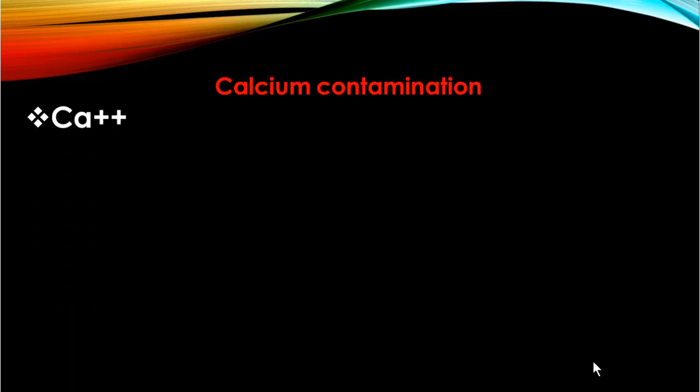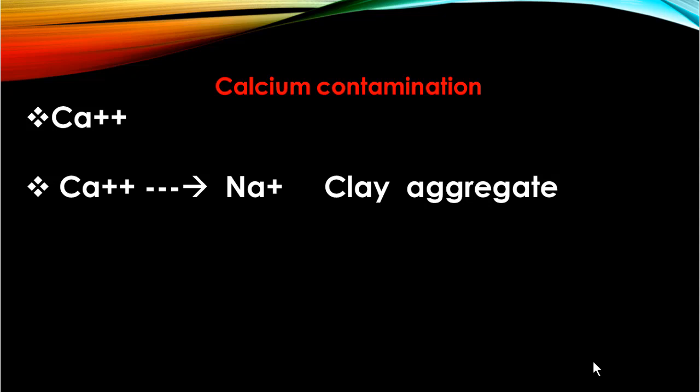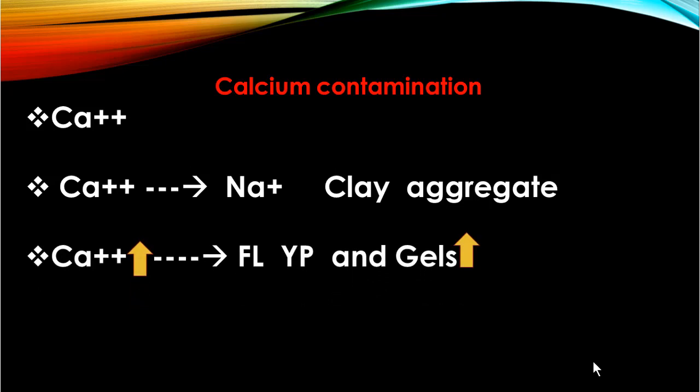For calcium contamination, calcium ions may become sufficiently concentrated to flocculate the drilling fluid. As calcium ions replace sodium ions in the clay, the clay particles tend to aggregate. The result of the contamination is an increase in calcium ion concentration, fluid loss, yield point, and gel strength.